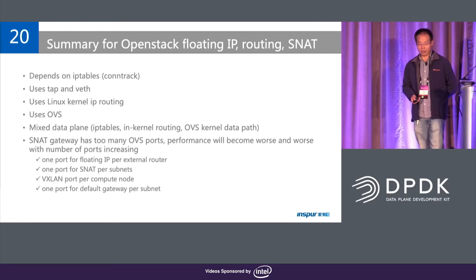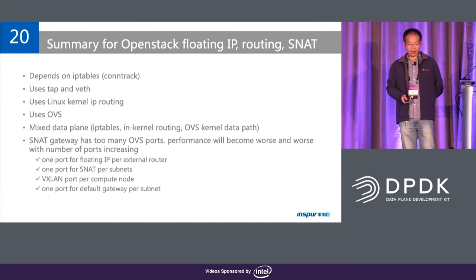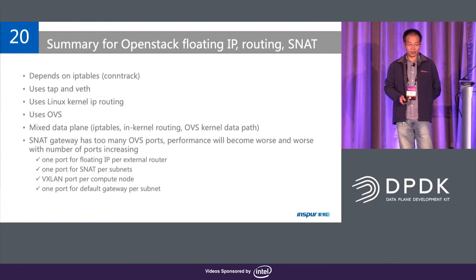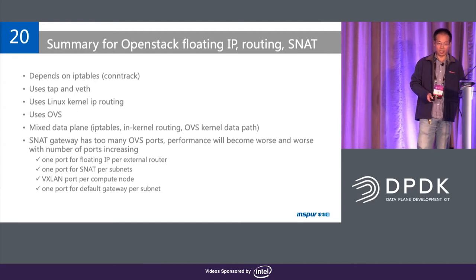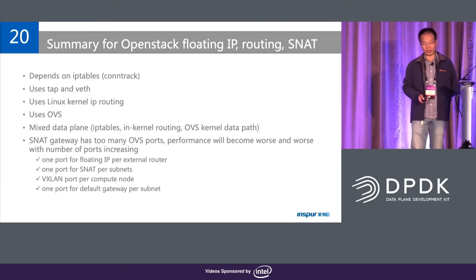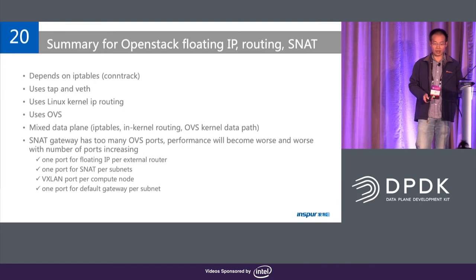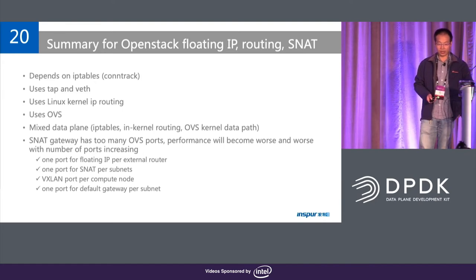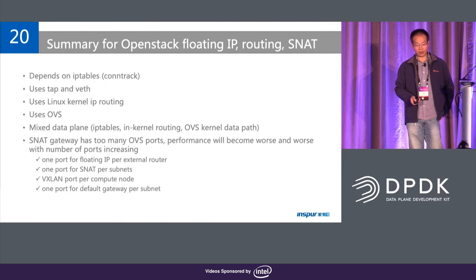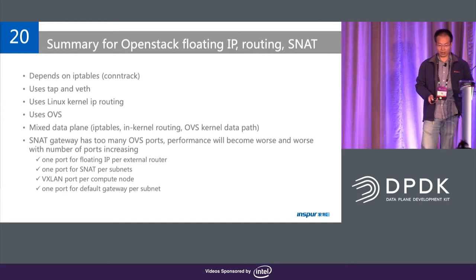Let's summarize these features in OpenStack Neutron. Actually, OpenStack Neutron highly depends on iptables, especially connection track. These features use TAP interface and veth interface. They also use in-kernel IP routing. They also use OVS datapath. So actually OpenStack Neutron is using mixed datapaths — iptables, kernel routing, and OVS kernel datapath.